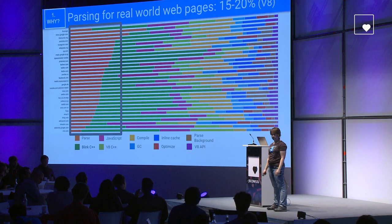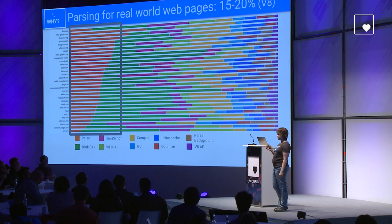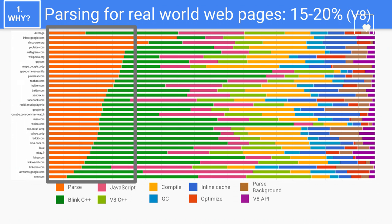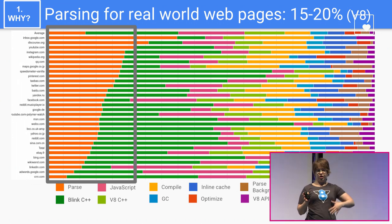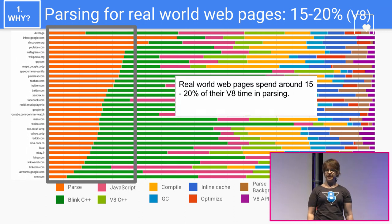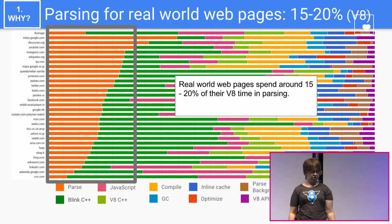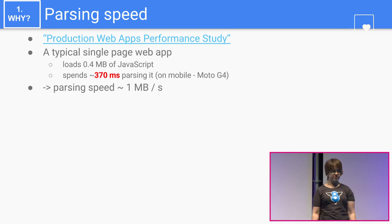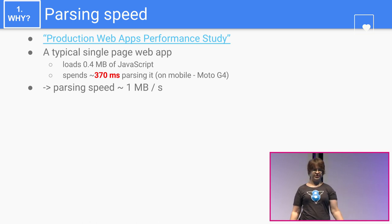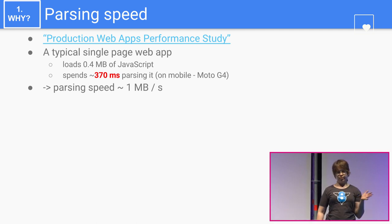Why should you care about parsing? Here's a diagram of where real-world webpages spend their time in V8. Parsing is the orange blob on the left, and it turns out webpages spend around 15 to 20% of their V8 time in parsing. According to Google's production web app study, a typical single-page web app loads around 0.4 megabytes of JavaScript and spends around 370 milliseconds parsing it on mobile. Our parsing speed is roughly one megabyte per second on mobile.